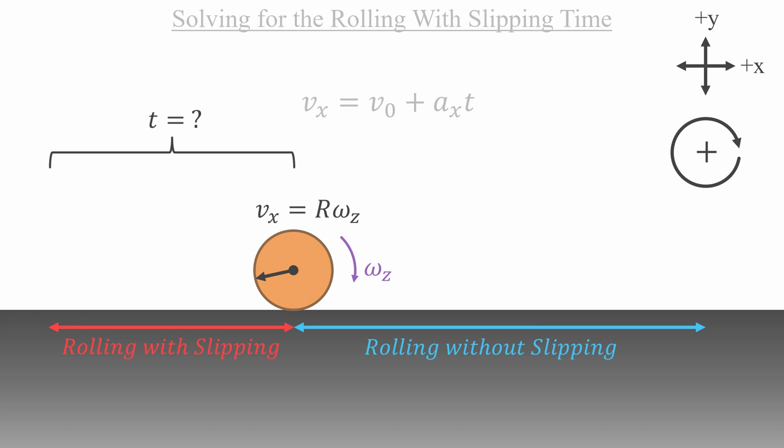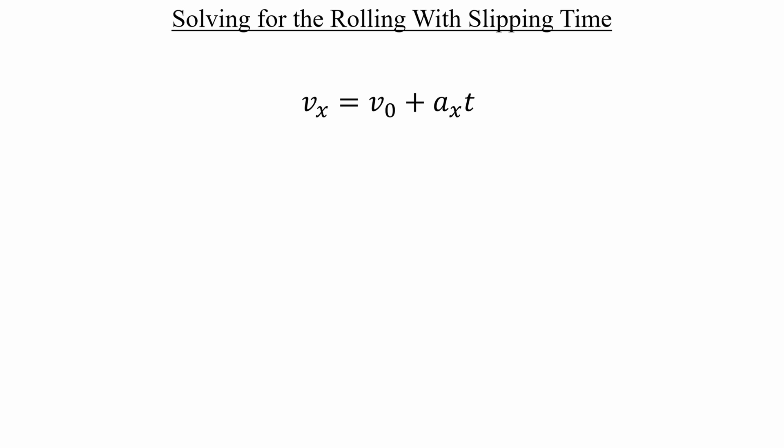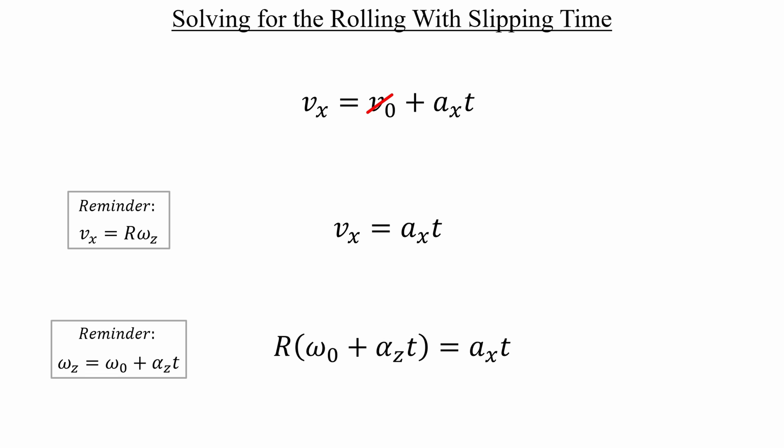So let's start with this kinematic equation. Since our cylinder doesn't start with a center of mass velocity, we can get rid of v naught right away. And speaking of center of mass velocity, we know that it will have this value the moment that rolling without slipping begins. So let's plug that in over on the left-hand side. Now, unfortunately, we don't know the value of omega z. We were only given omega naught. But that's okay, because we can relate those two quantities by using the kinematic equation for angular speed. Once we plug that in, we have everything that we need in order to solve for the time.